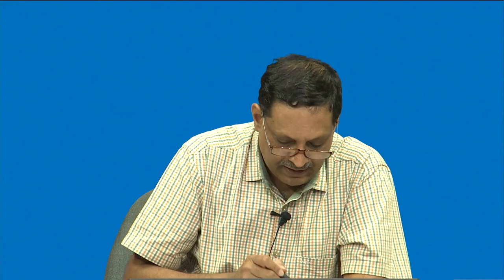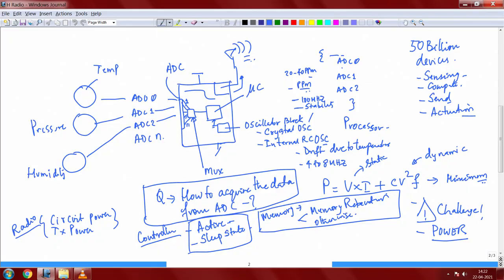We will answer this question related to how to acquire data from ADC. We have already shown this picture where there are several ADC sensors. You have ADC0 to ADCN — there are multiple ADC ports to which the sensors are connected.